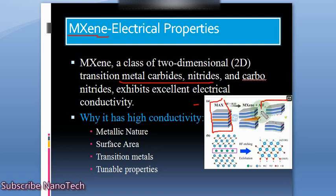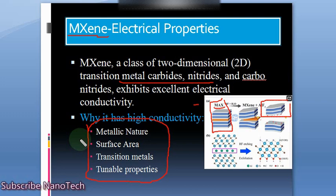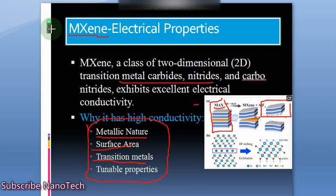After removing the A layer, we obtain the MXene sheet. The formula becomes MX with surface terminations (T). For instance, if we have MAX phase Mn+1AXn, the MXene representation would be Mn+1XnTx. Moving on, there are four major reasons why MXenes have excellent electrical properties: metallic nature, surface area, transition metals, and tunable properties. We will discuss them one by one.